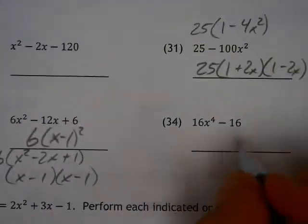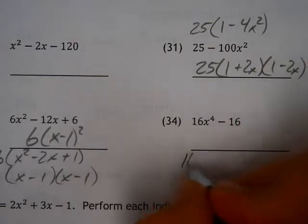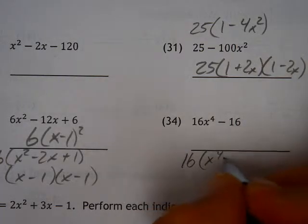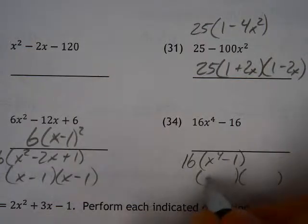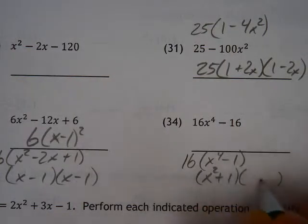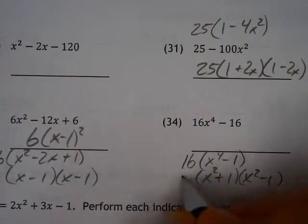And the last one here, if we can do this, take out your 16, you've got your x to the fourth minus 1. Now that factors again. And what you're going to find here is that this is x squared plus 1, x squared minus 1,